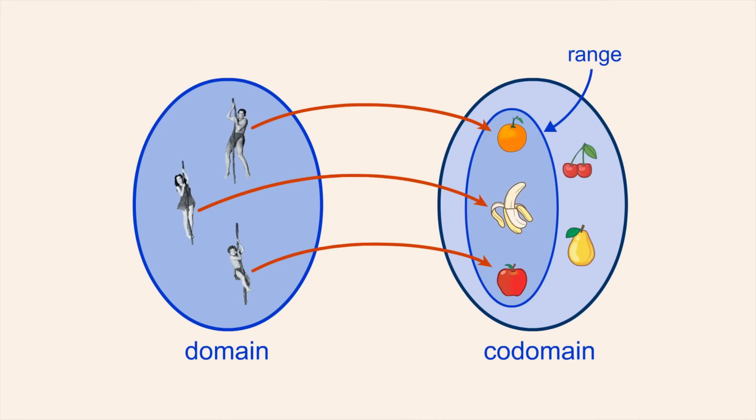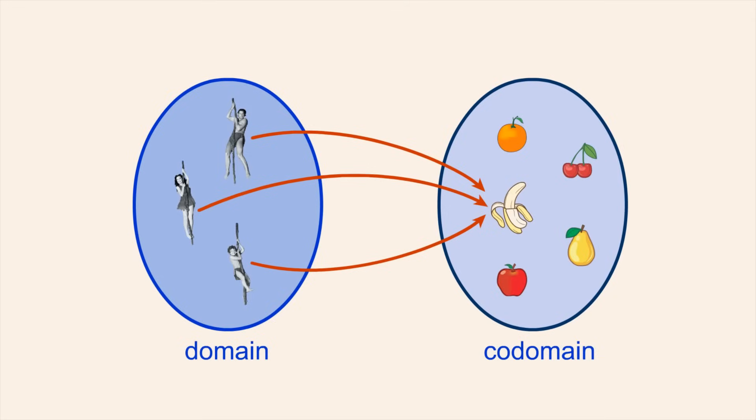then the range would be a subset of the co-domain containing three fruits. Or if two people had the same favorite fruit, the range would be a subset containing two fruits. Or perhaps everyone had the same favorite fruit, then the range would be a subset of the co-domain containing only one fruit.